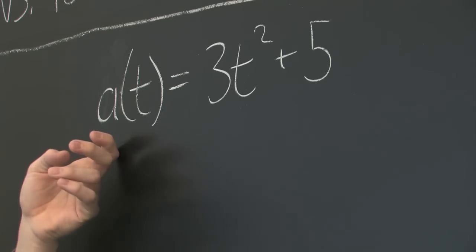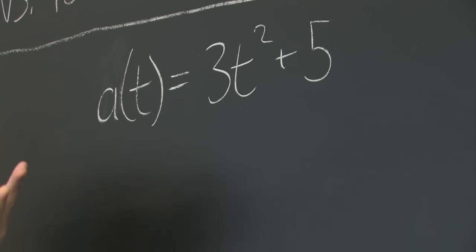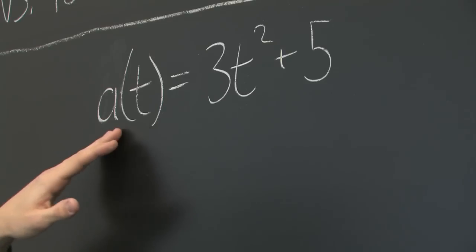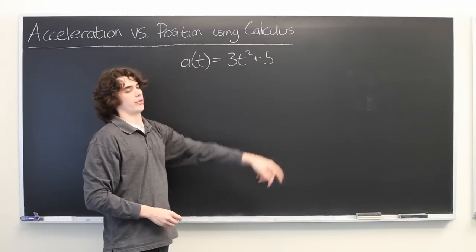So, here we have some function that describes the acceleration of some object. It could be a skateboard, an electron, whatever, describing the acceleration as a function of time represented by the variable t. Here we have a is equal to 3t squared plus 5.